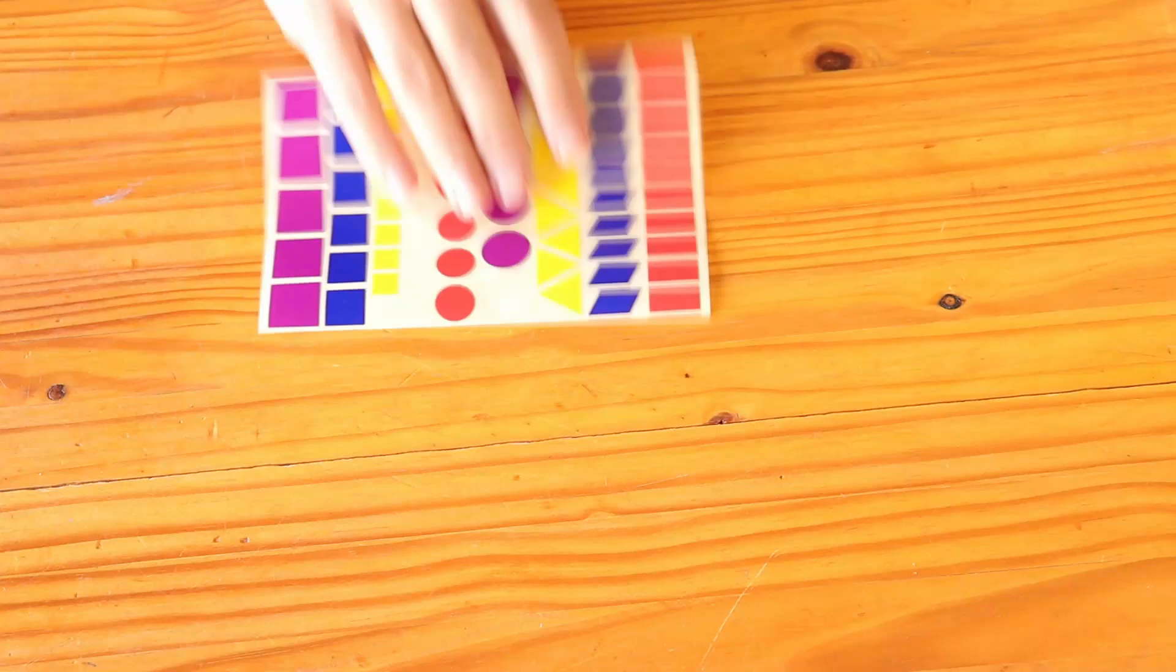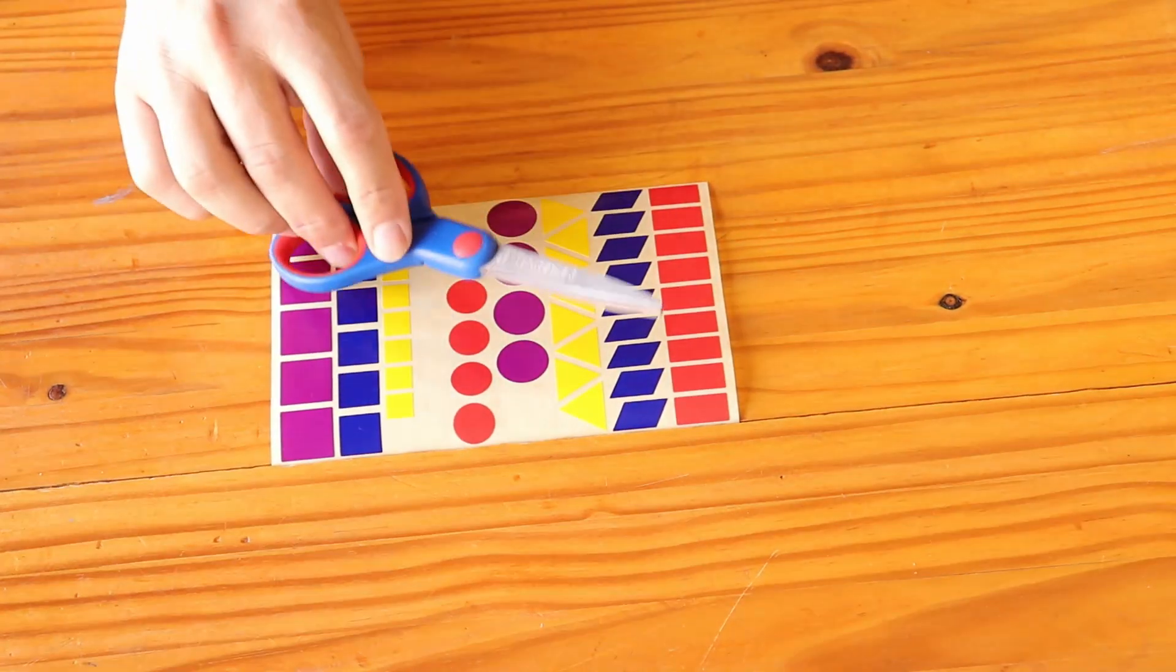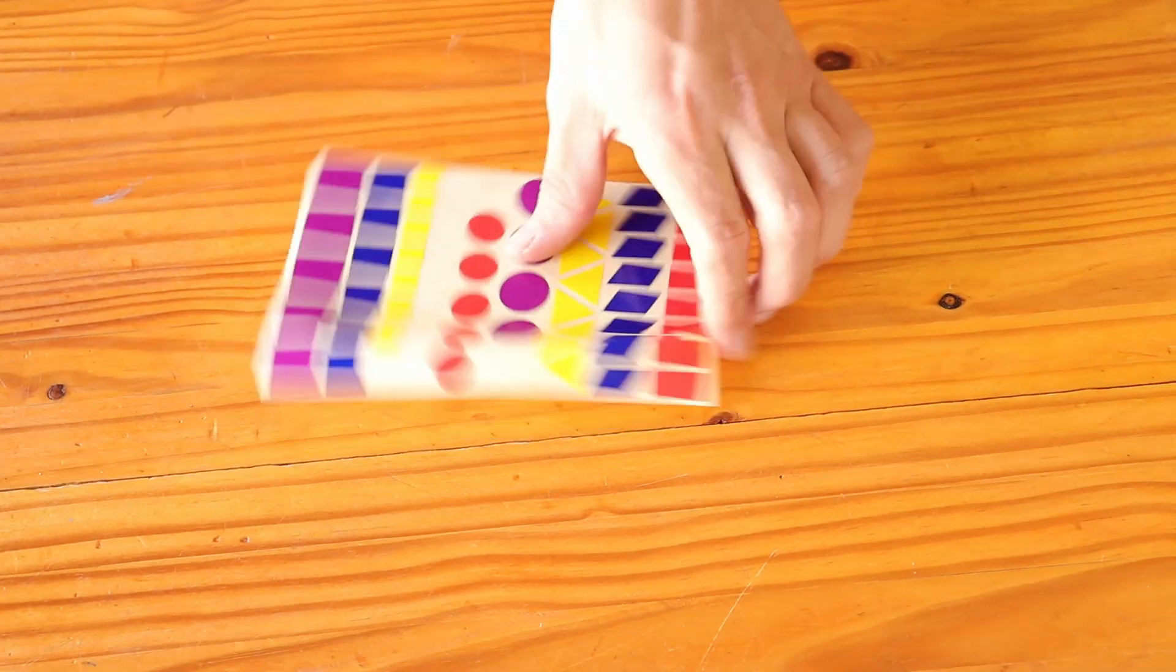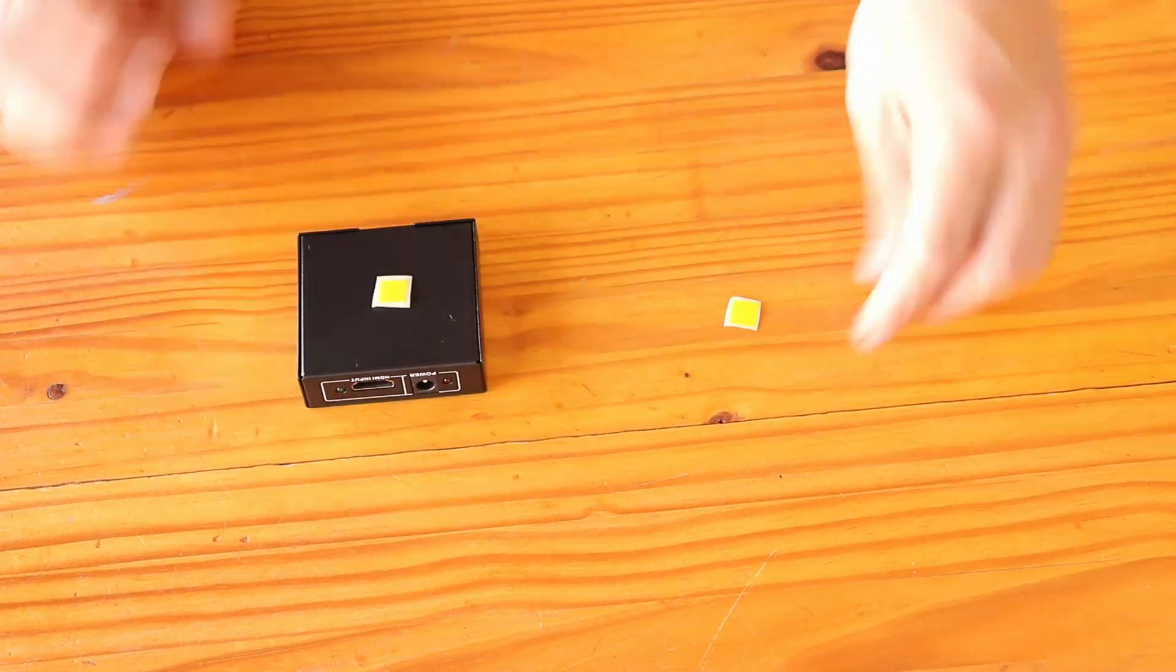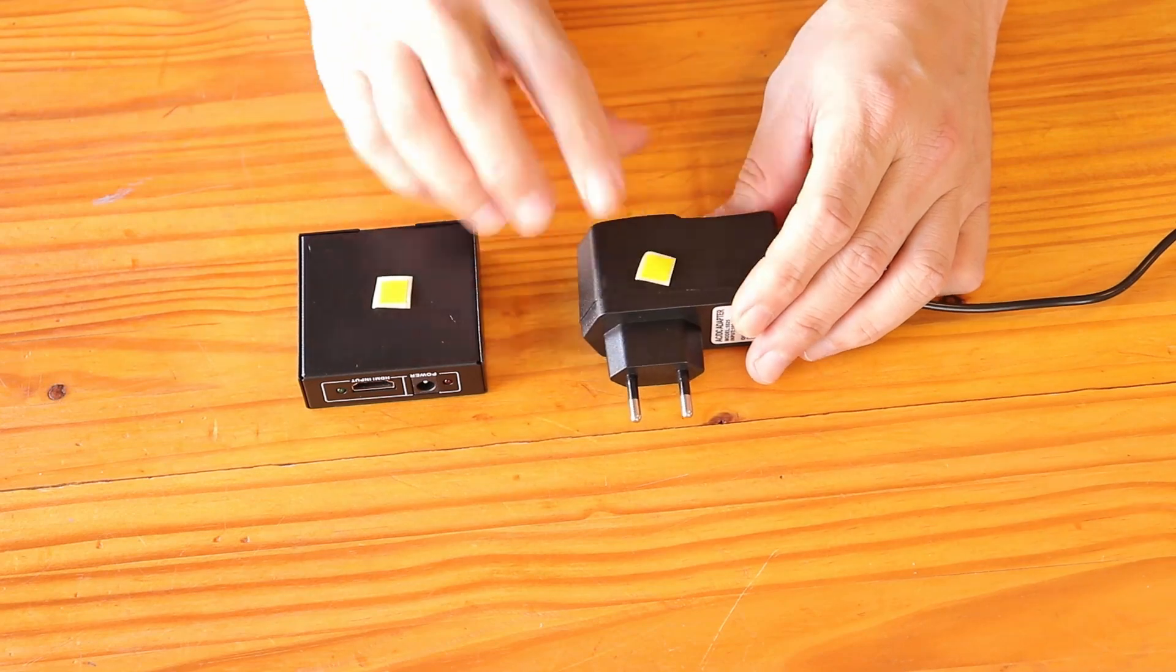For this fix, you'll need some colored stickers and a pair of scissors. Cut out two similar stickers. Simply stick one to the back of your device and the other to the back of its power supply. Simple.